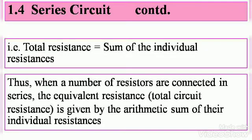That means the total resistance equals the sum of the individual resistances. Thus, when a number of resistors are connected in series, the equivalent resistance (total circuit resistance) is given by the arithmetic sum of their individual resistances.